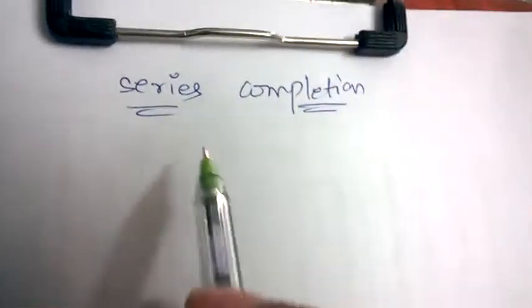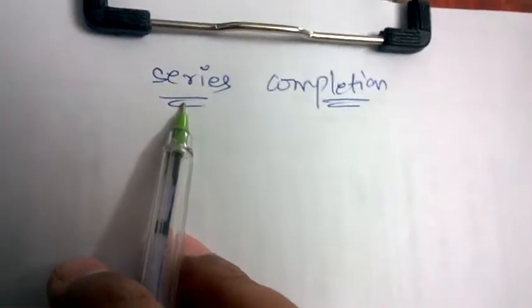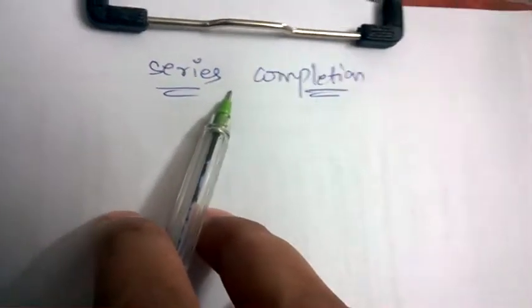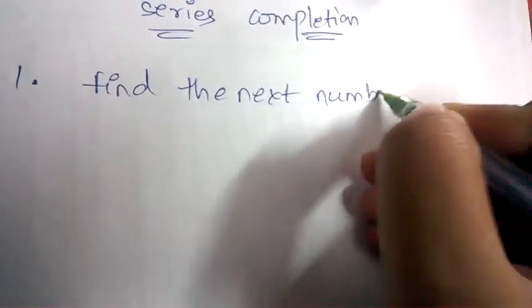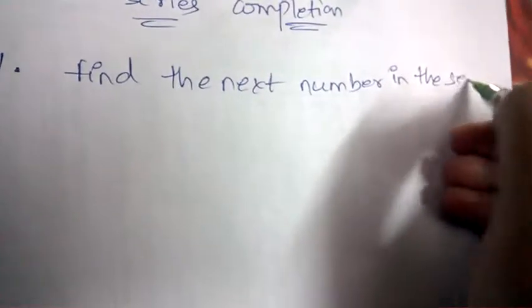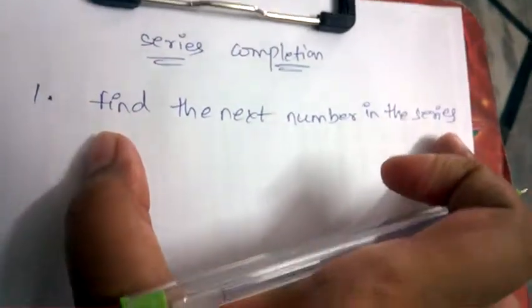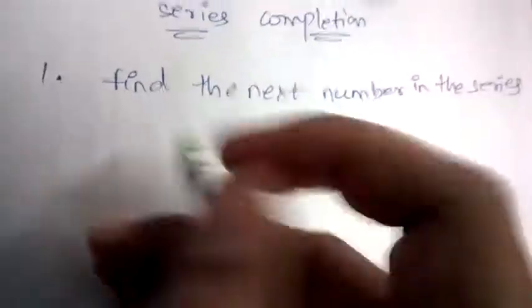Welcome back to Best Way to Study. Let's begin the CRT session of verbal and non-verbal reasoning. Today we are going to discuss problems on series completion. This topic can be better explained and understood with a few examples. The question will be common — only the numbers in every question will be changing. The common question is: find the next number in the series.